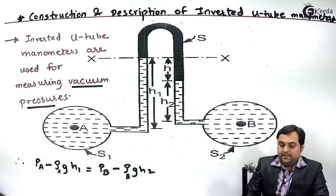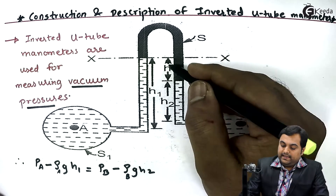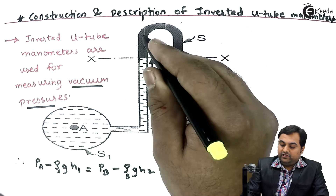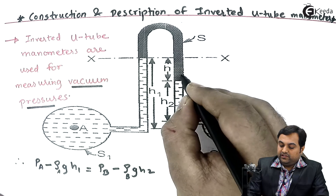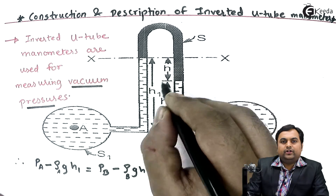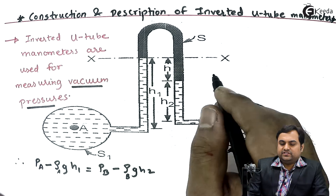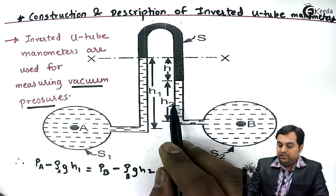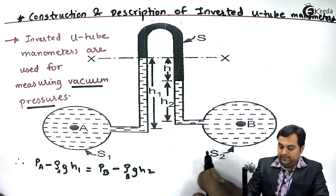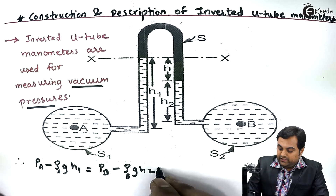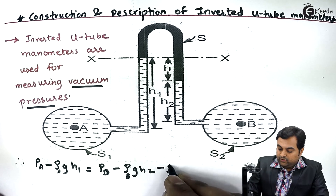The density here is for the fluid in pipeline B. H is the height of the heavier liquid. This heavier liquid would be either mercury or any liquid which is given, but it should be heavier than the liquid in the pipeline. So its height is h, and I'll write minus rho × g × h.